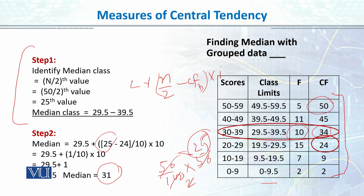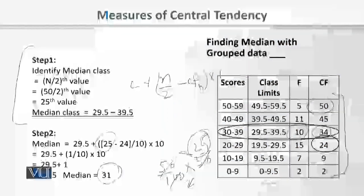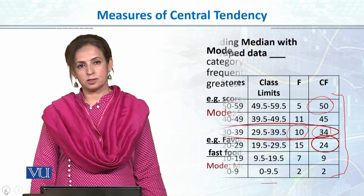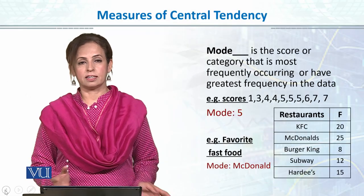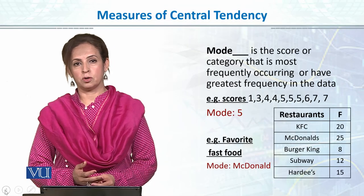Data sets is tarah ke hote hain jahan pe humein median required hai, lekin it's you who will decide how we will choose mean or median. Aur teesra hamara central tendency ka measure hota hai — mode.